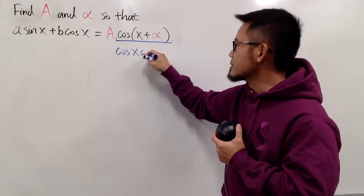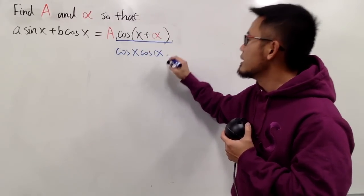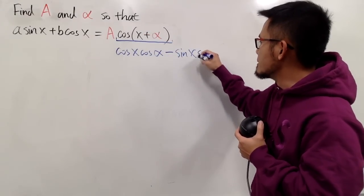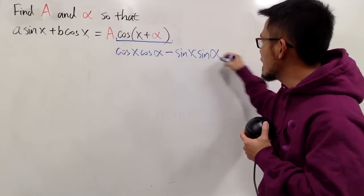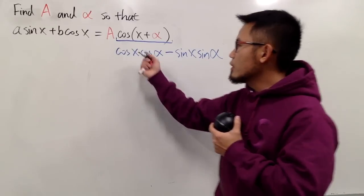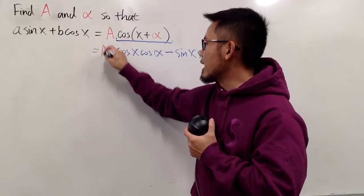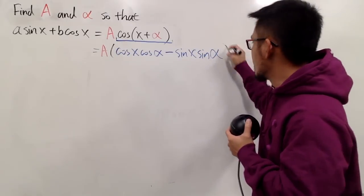I will write this down for you guys. The result of this is going to be cosine of the first angle, which is x, times cosine of the second angle, which is alpha, and then minus sine of the first angle, which is x, times sine of the second angle, which is alpha. And of course, we have to have the parentheses.